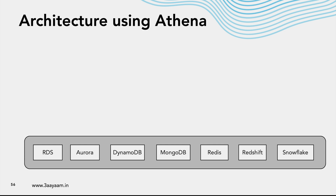We might have BI tools that need to run queries across these various data sources. Of course, we could move all the data to Redshift and query from there, but let's say we need to run ad hoc queries. We need to create an interface that allows ad hoc queries to be run by various tools, including front-end UI screens executed by customers. Since these are ad hoc queries, it doesn't make sense to put them in Redshift or Snowflake, which are mainly used for data warehousing.